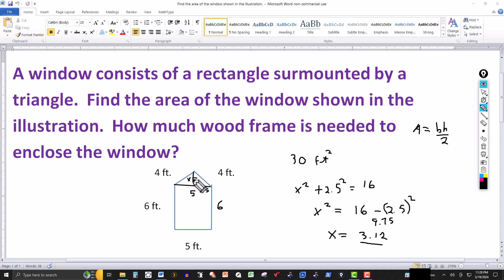So then if I want the area of this triangle right there, the area of that triangle then would be equal to one half. The base. And the base of that big triangle is 5. So this would be 5. The altitude in this case is x. So this would be times 3.12. And this would be 7.8. So the area of the triangle is 7.8 square feet.